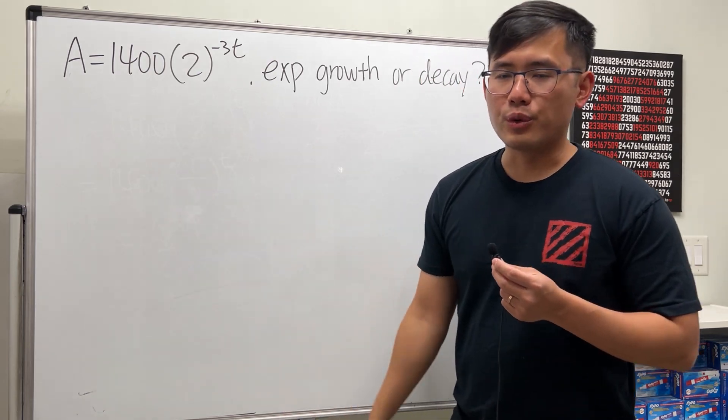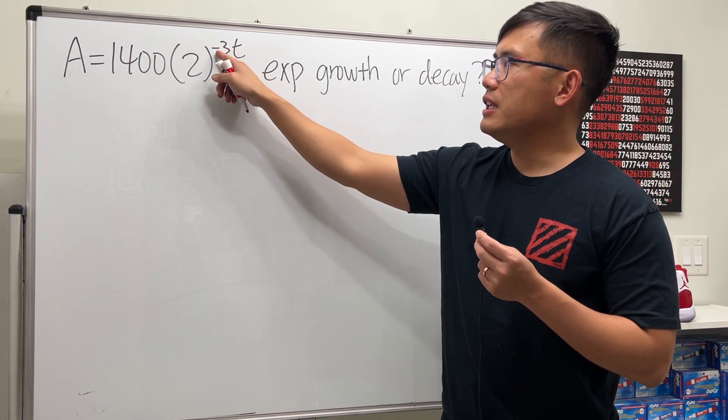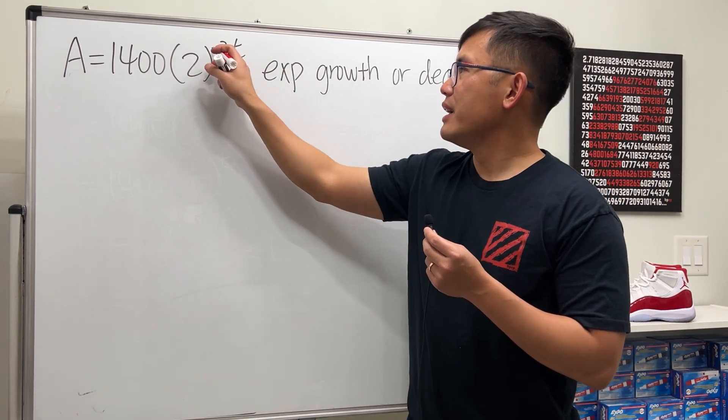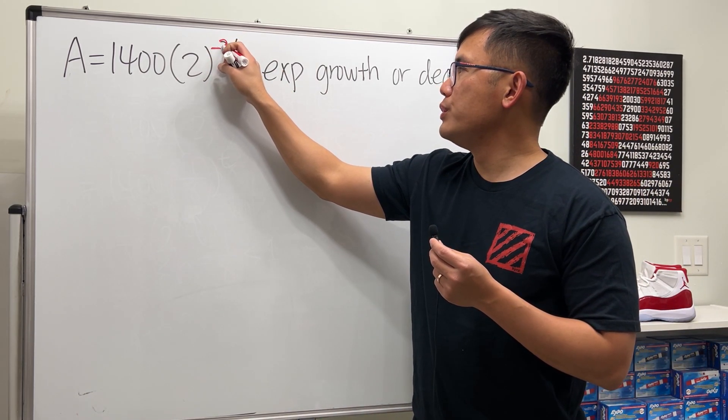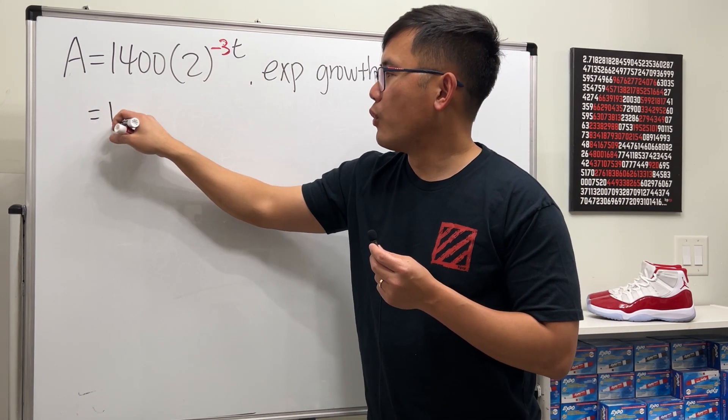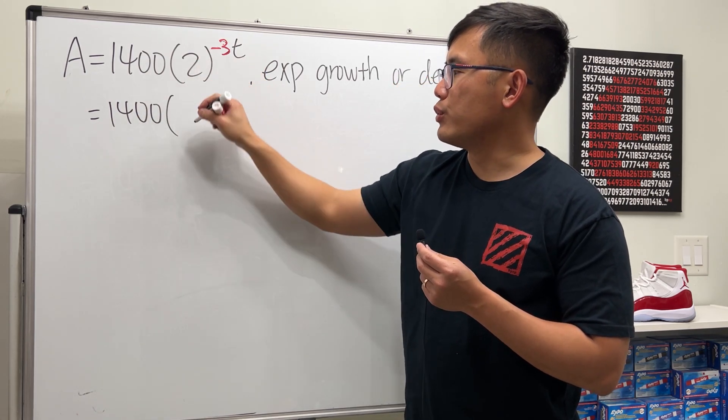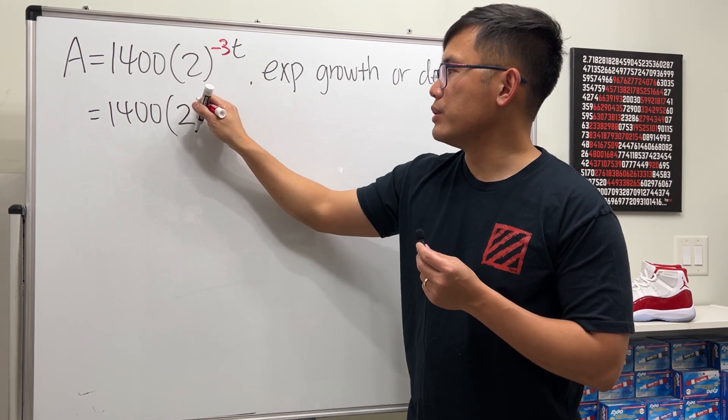Check this out. We have this negative 3, right? Well, let's rewrite this as 1400, and then let's give the negative 3 to the 2 first. So let me write it as 2^(-3) and then raise to the t power.